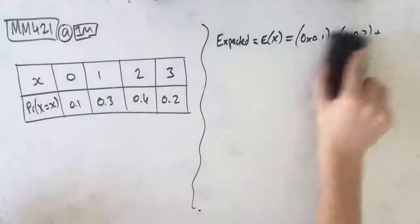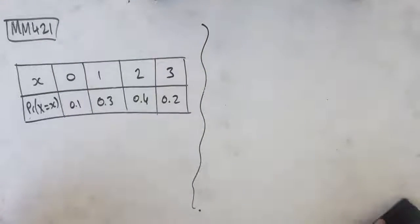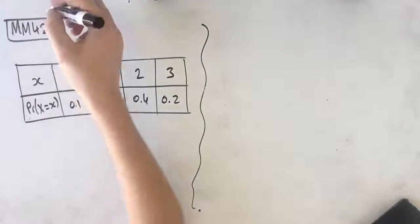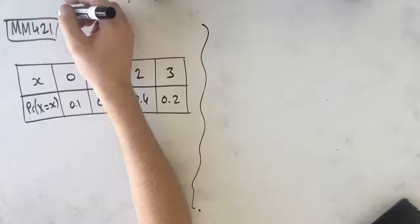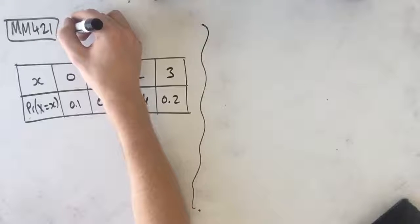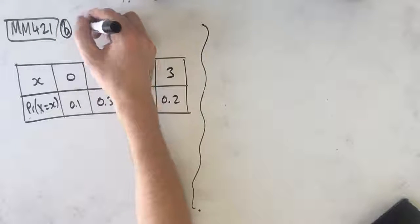Part B is a two-mark question and says, James works on a Monday and the following Tuesday. What is the probability that the number of rude customers he serves is the same on both days? So this is a two-mark question.